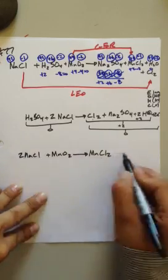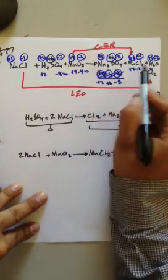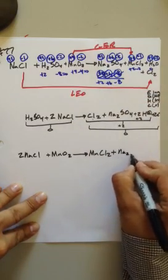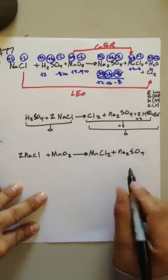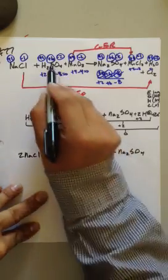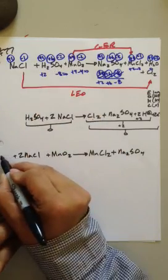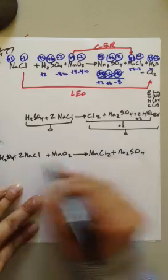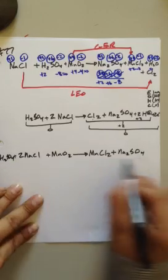And how many are we going to need? Two NaCl. So now the chlorines are balanced, but now we have two NAs. What is the only thing on this side that has NAs? Look at that, Na2SO4. So the NAs are balanced. Now we have this annoying SO4. How do we get that on this side? We have H2SO4.